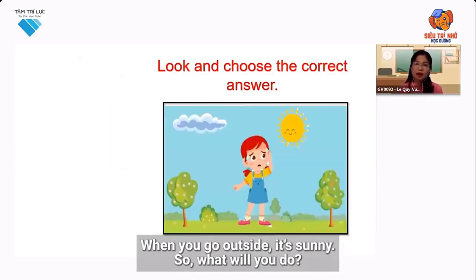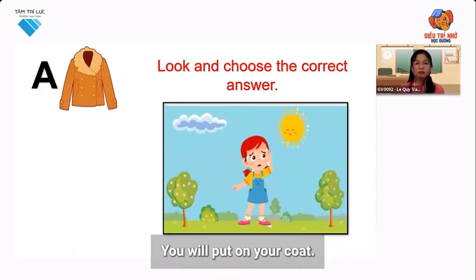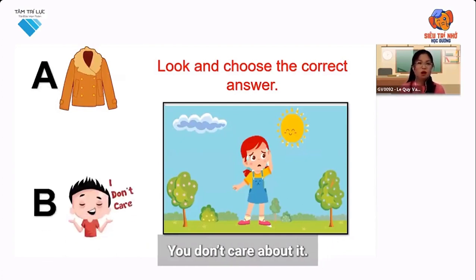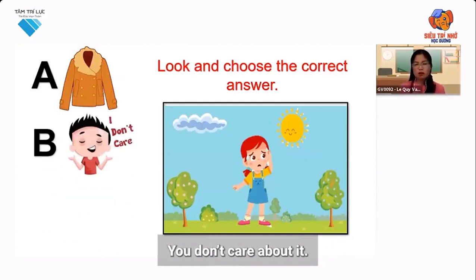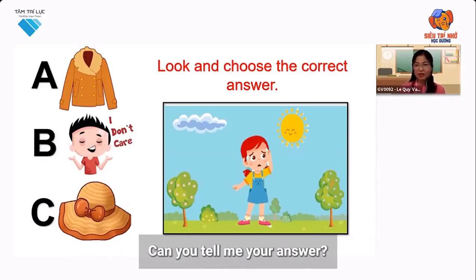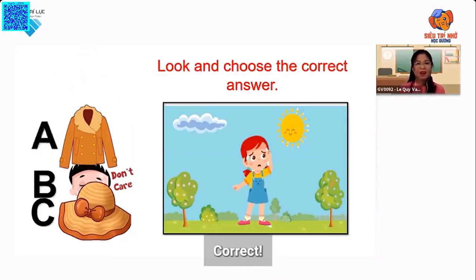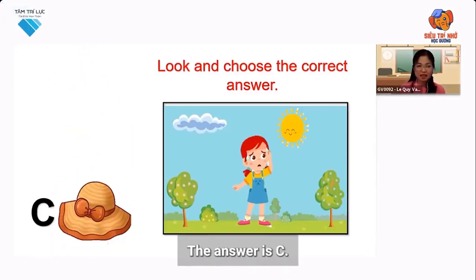When you go outside, it's sunny. So what will you do? You will put on your coat. You don't care about it. Or you will put on your hat. Can you tell me your answer? I think this one is easy for you. Correct! The answer is C.